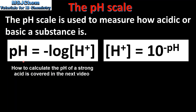To calculate the pH of a substance we use the equation on the left, so that pH is equal to the negative log to the base 10 of the hydrogen ion concentration. If we know the pH of a substance we can calculate its concentration of hydrogen ions. The concentration of hydrogen ions is equal to 10 raised to the power of the negative pH value.